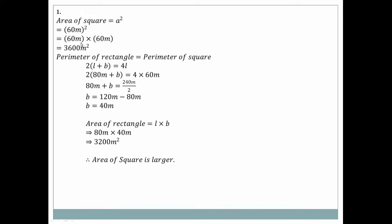The figure shows a square and rectangle shape. We need to find the area and perimeter. Area of square formula: side squared. The figure shows side = 60 meters, so 60 × 60 = 3600 square meters.